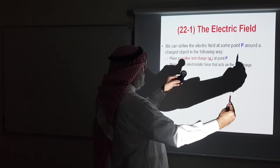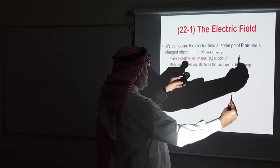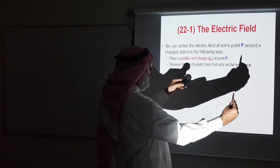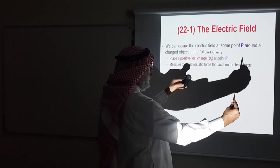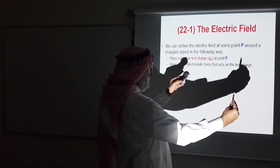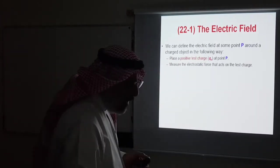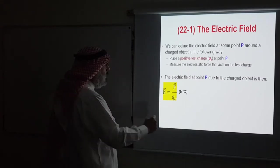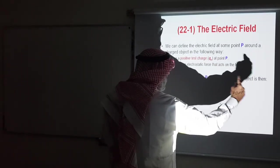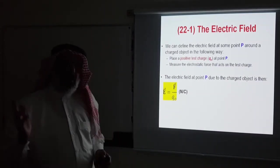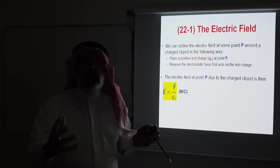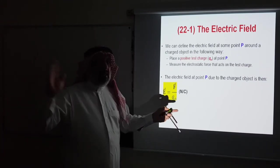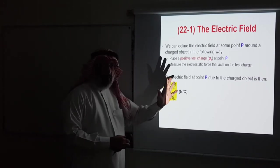We place the positive test charge at the point where we want to find the electric field, then measure the electrostatic force acting on that test charge due to the electric field produced by the charged object. The electric field at that point is defined as the force measured on the test charge divided by the test charge itself. The test charge is like a catalyst — we bring it, measure something, and then it disappears; it will not appear in the final equation of the electric field.